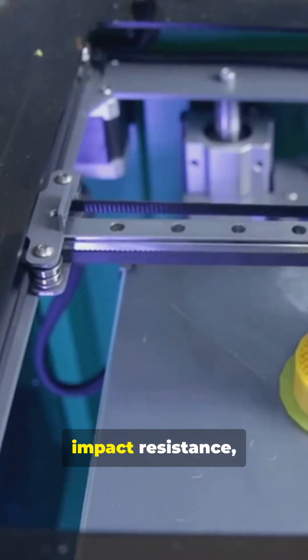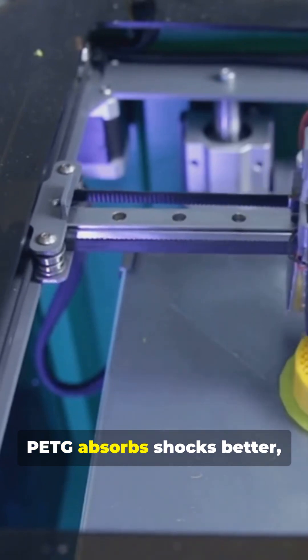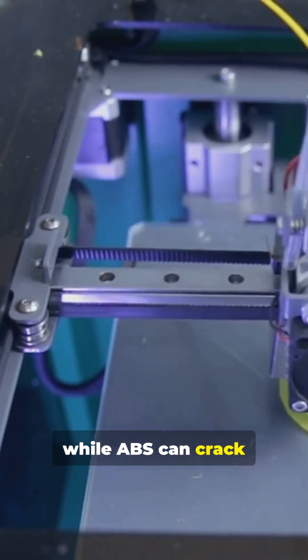When it comes to impact resistance, PETG absorbs shocks better, while ABS can crack under stress.